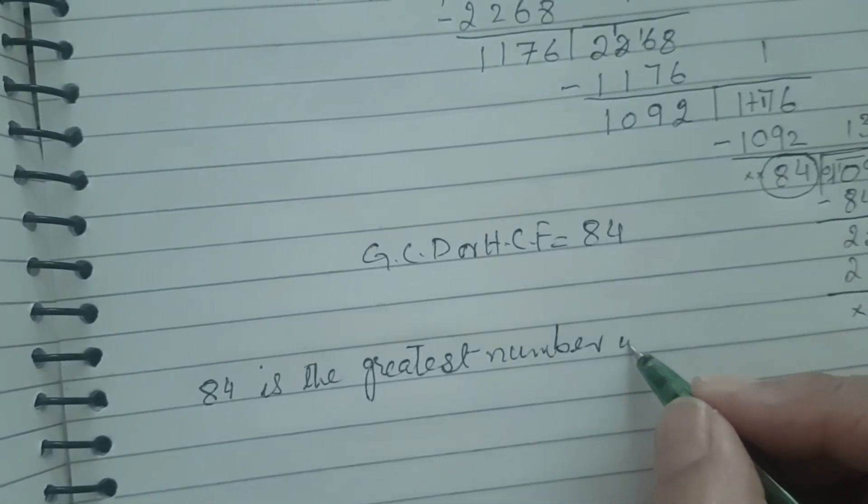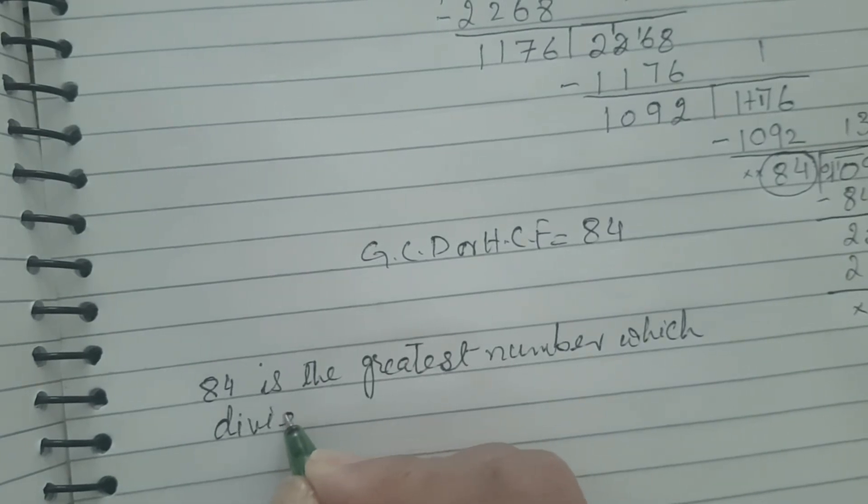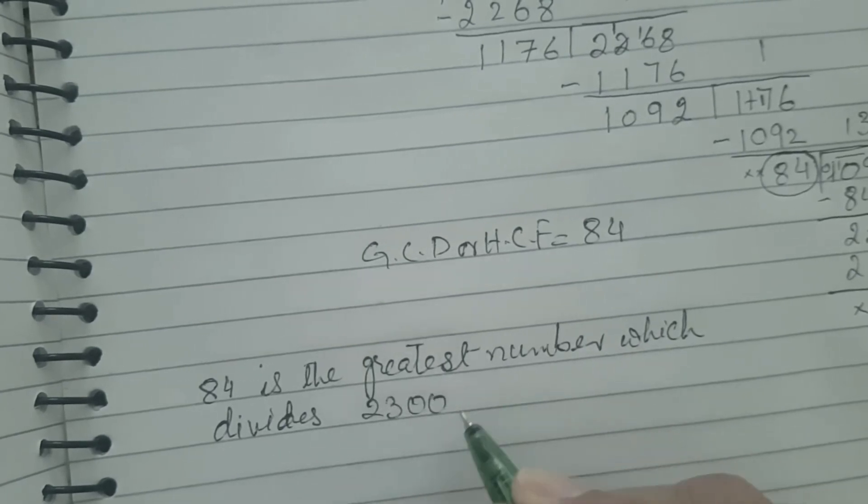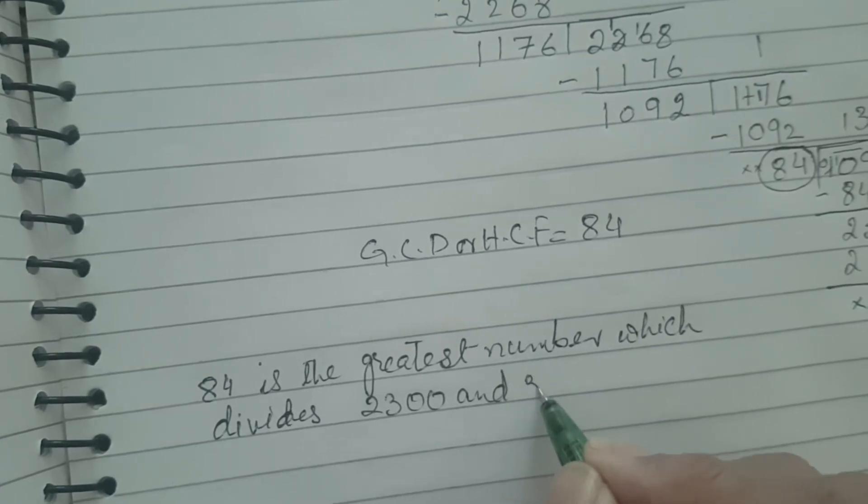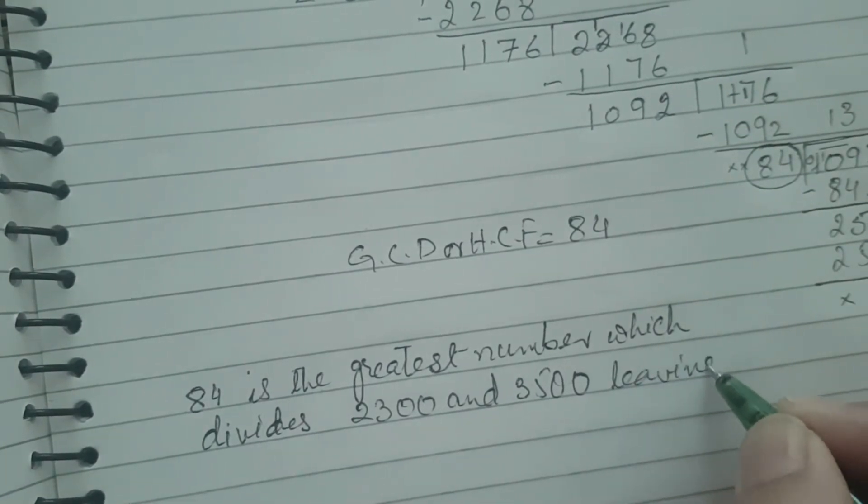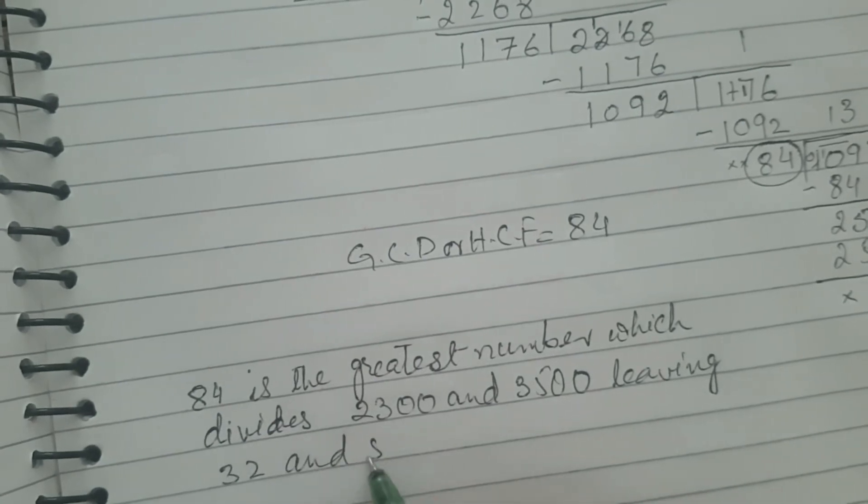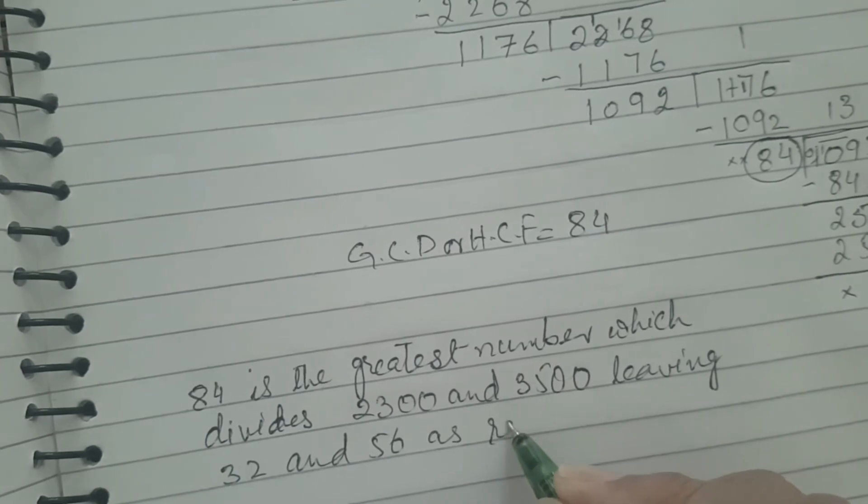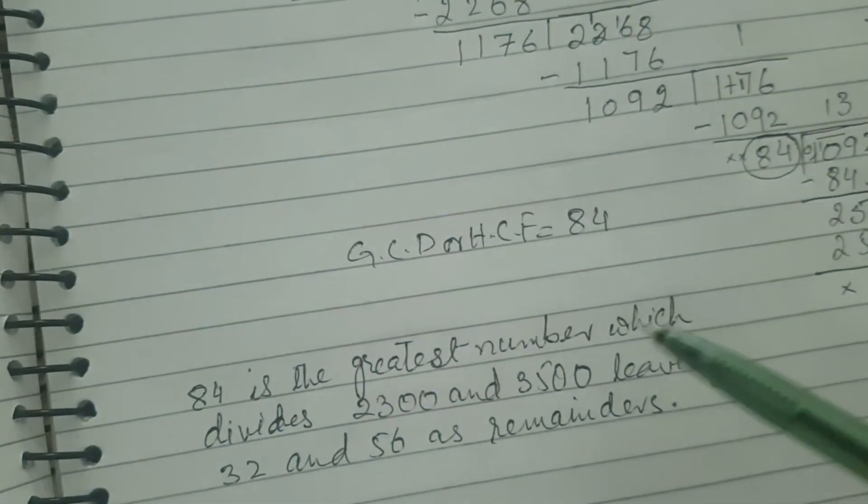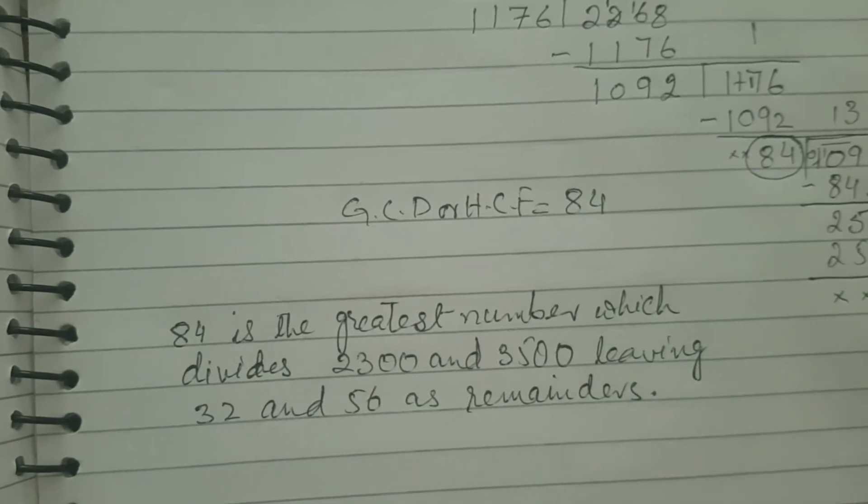Your statement will be: 84 is the greatest number which divides 2300 and 3500 leaving 32 and 56 as remainders. This is a must to write down the statement with the problem sum when it is given.